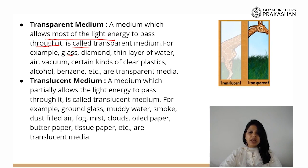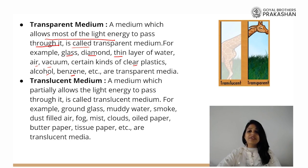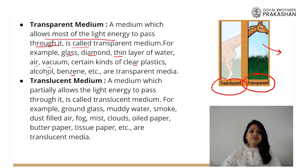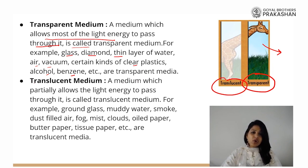Examples of transparent mediums include glass, diamond, a layer of water, air, vacuum, and even clear plastic, alcohol, and benzene. You can see the giraffe clearly through a transparent medium. On the other hand, there is a picture where you are not able to see the giraffe's body very clearly — this kind of material is called a translucent medium. A medium which partially allows the light energy to pass through it is called a translucent medium.